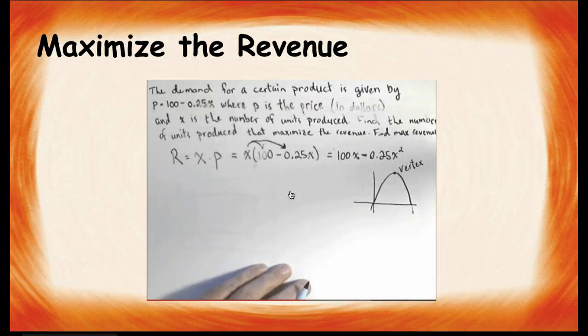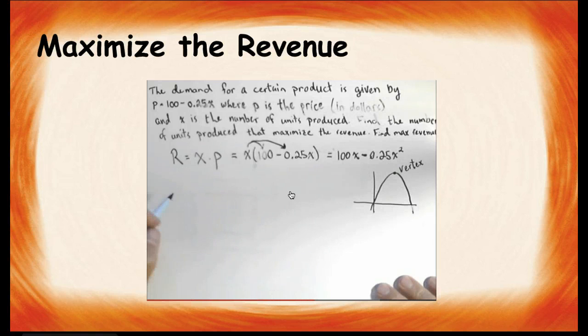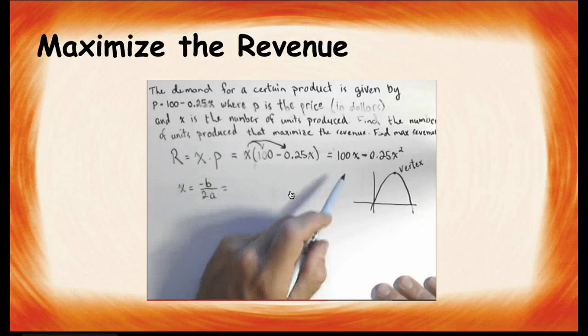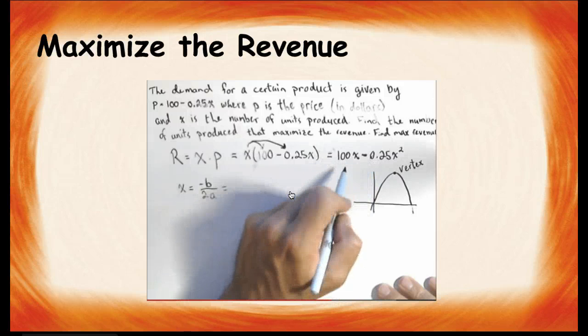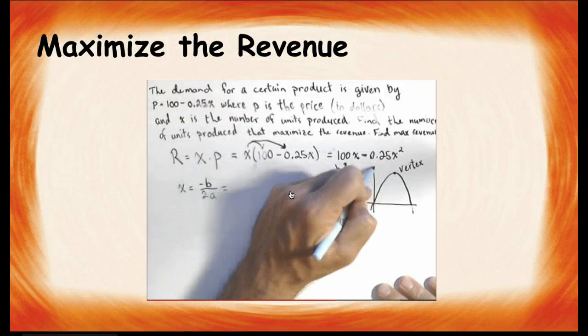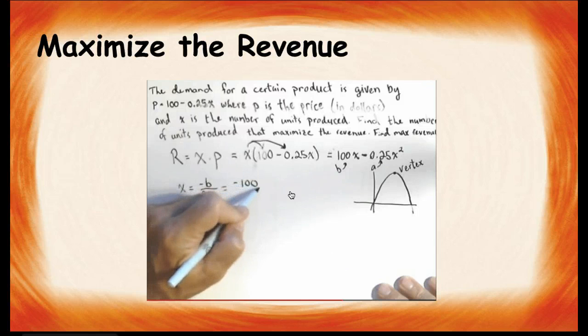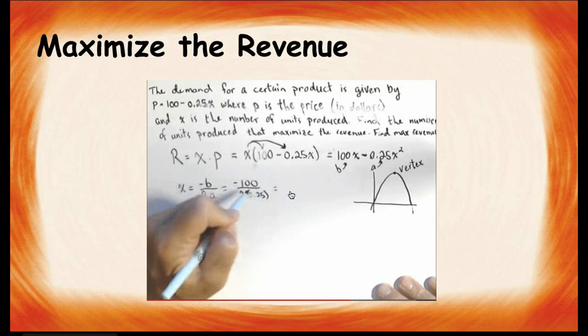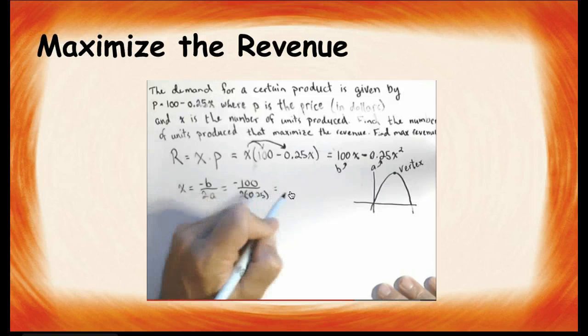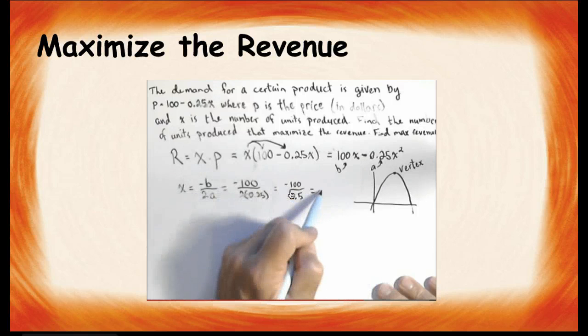Now, we've seen in other, I have other videos that show how to do a maximum with a graphing calculator. Let's talk about finding a vertex by hand. To find the vertex of a quadratic, to find the x coordinate, all you can do is use negative b over 2a. Now, our quadratic is not written in our regular form, so realize that the b is 100 and the a is negative 0.25. So, negative 100 over 2 times negative 0.25 gives us negative 100 over negative 0.5, which gives us positive 200.